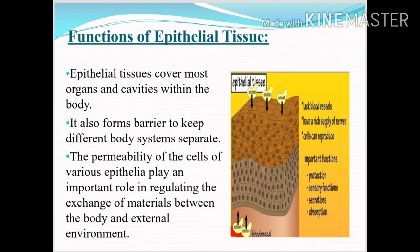The main functions of epithelial tissue: first, they cover the organs and cavities. Apart from that, epithelial tissues act as a barrier and help to keep different body systems separate. Regarding cell permeability, epithelial tissues play a very important role in regulating the exchange of material between the body and the external environment.